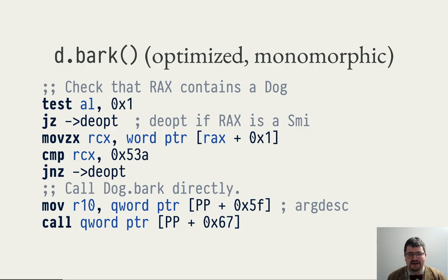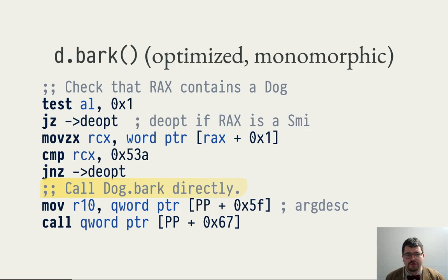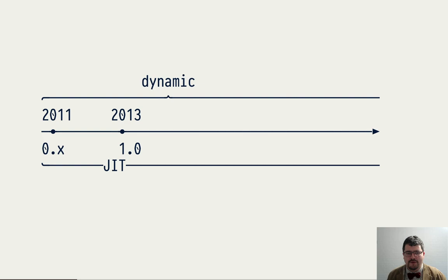For example, the optimizing compiler can specialize the code under the assumption that the receiver of a method call will always be a Dog. It inserts a check that validates this assumption, and after this check it performs a direct call to the target — in this case, the Dog.bark method. We still don't embed references directly into the generated machine code; we use the object pool to reference objects indirectly. This is a fairly established technique used in virtual machines from Java to JavaScript. We built the Dart JIT compiler over 2012–2013. It's a pretty good JIT with all the classical optimizations and compiler passes you'd expect.